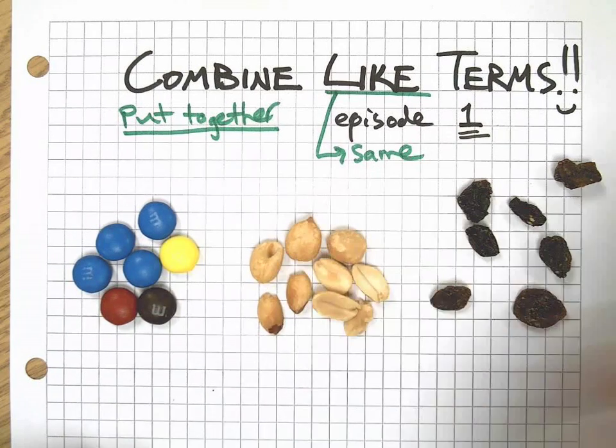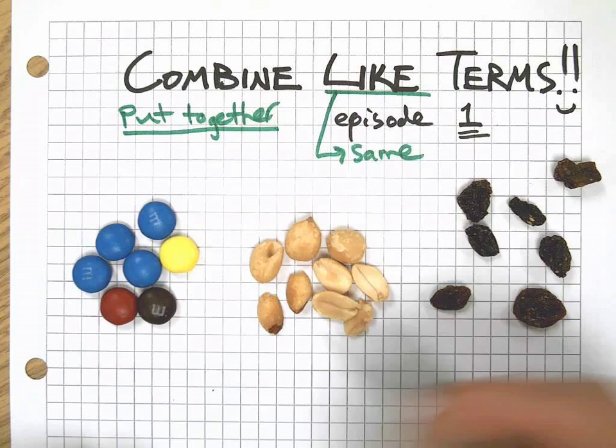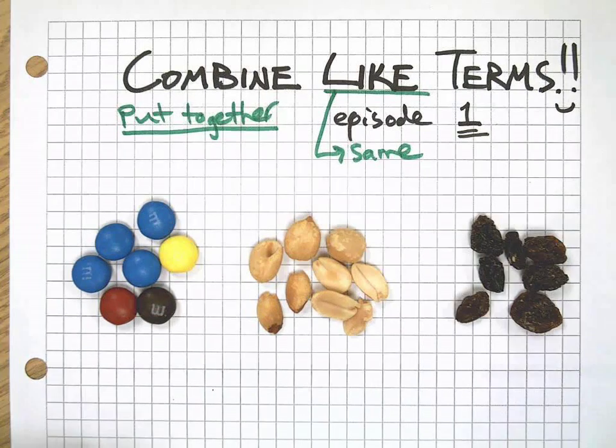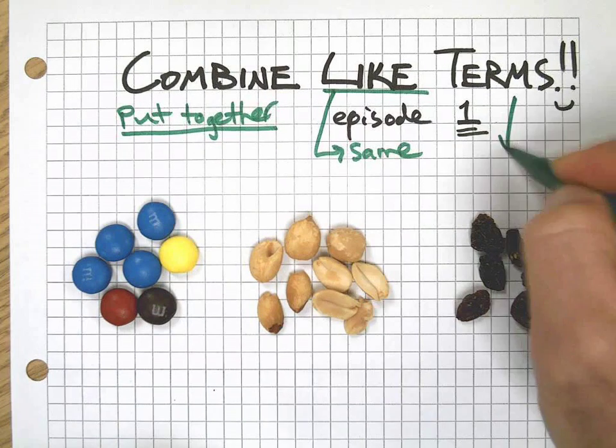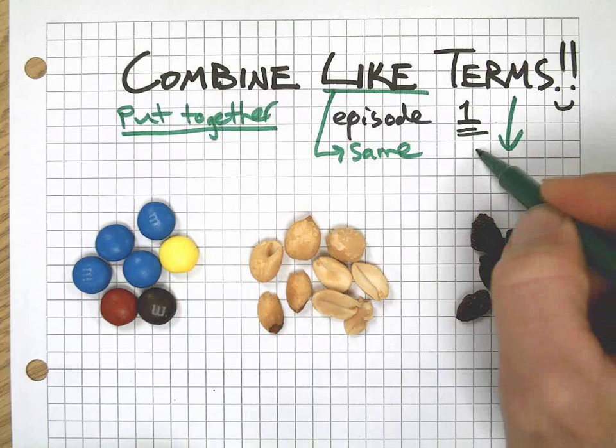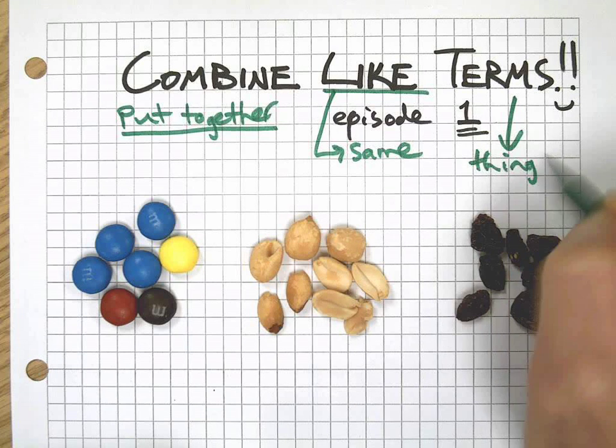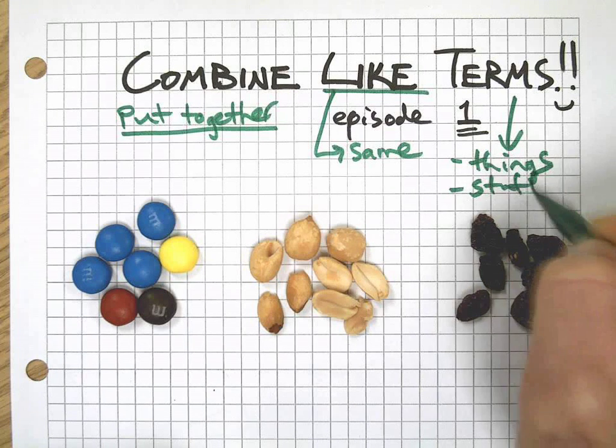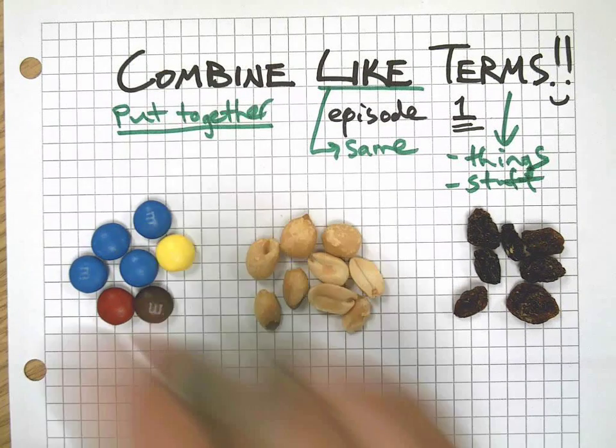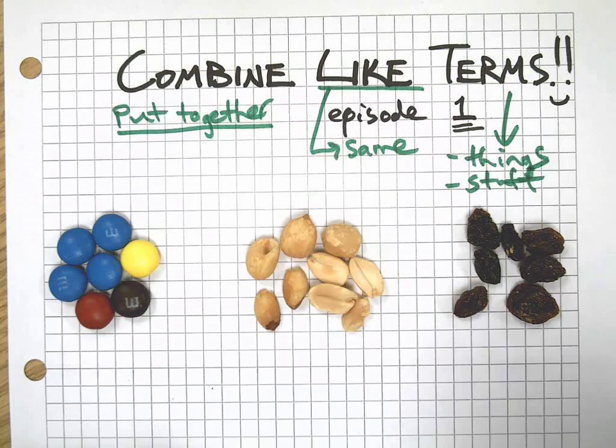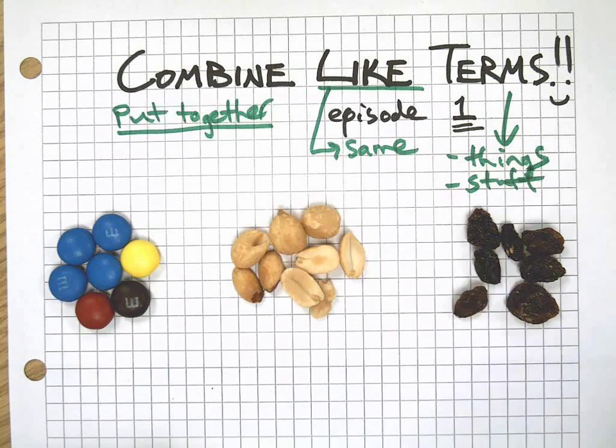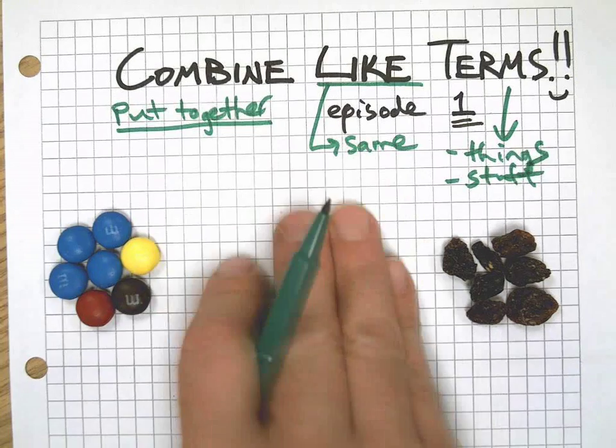Like means same, such as these are all M&Ms. These are all peanuts. These are all raisins. And terms means things or stuff, if you want to get real casual here. Such as here's putting together same things. There's some more same things. You get the idea, right?